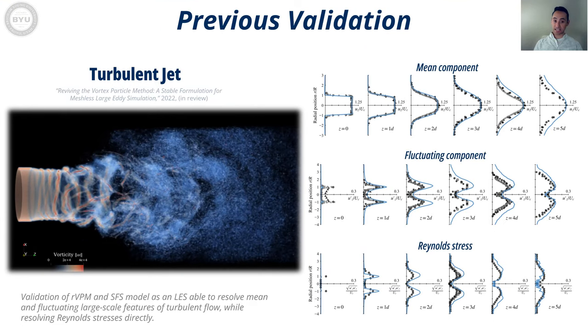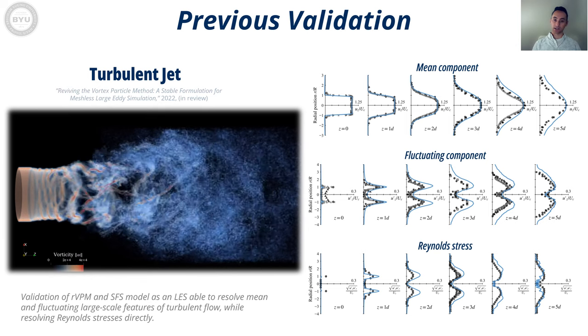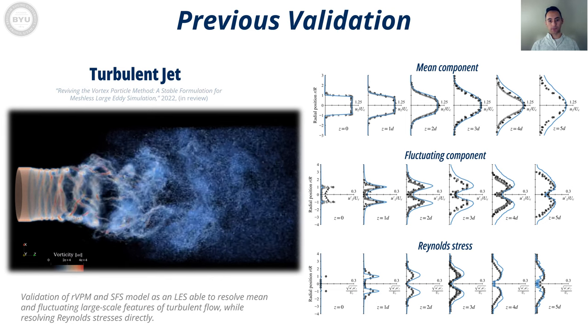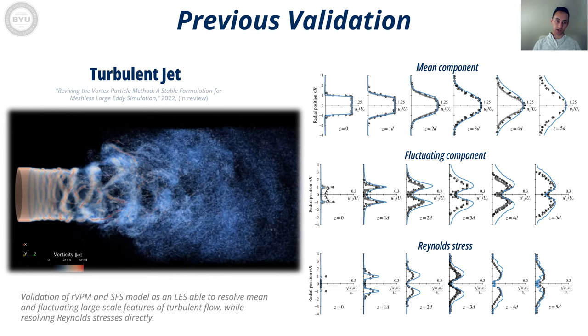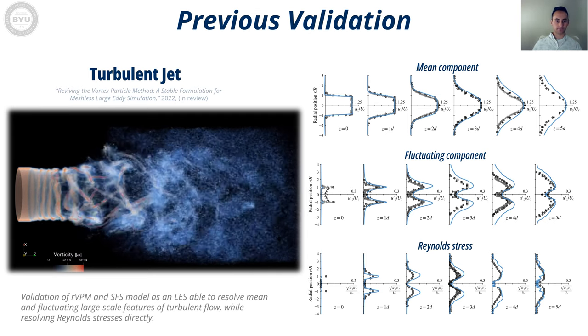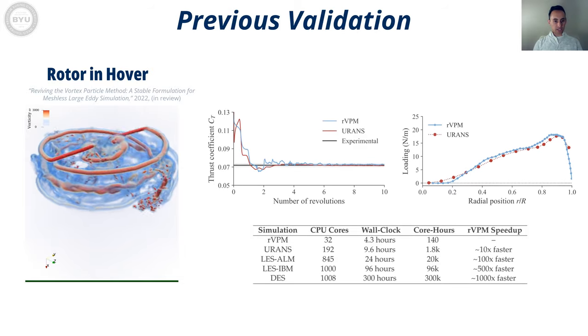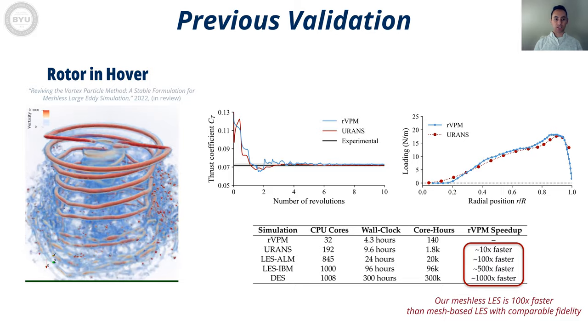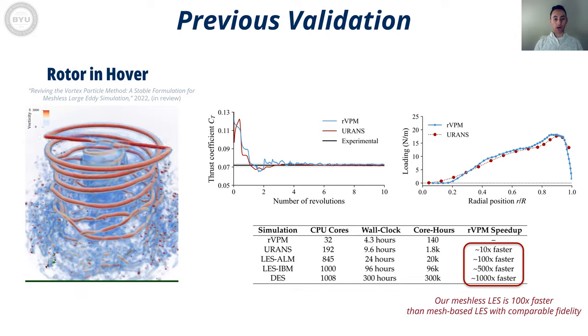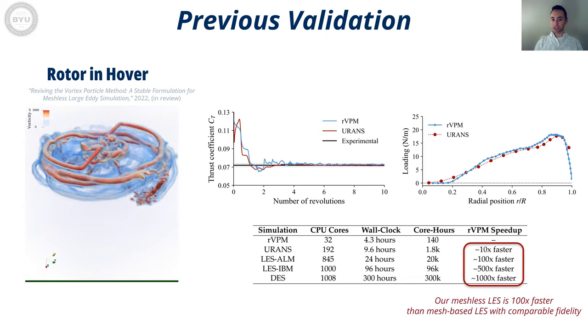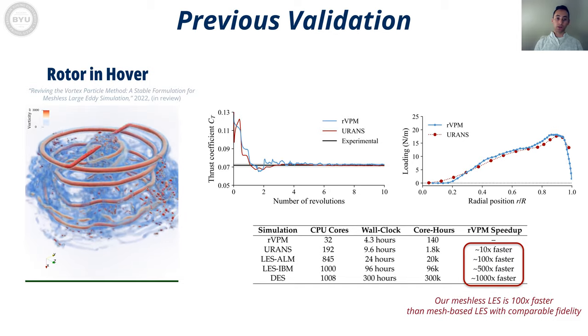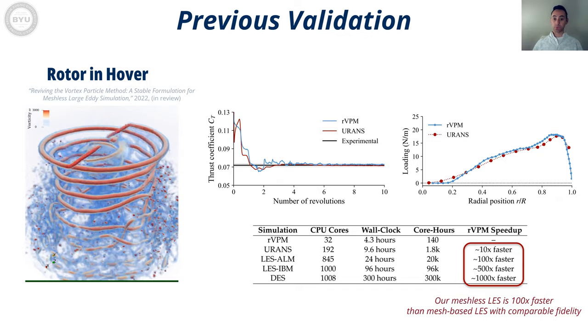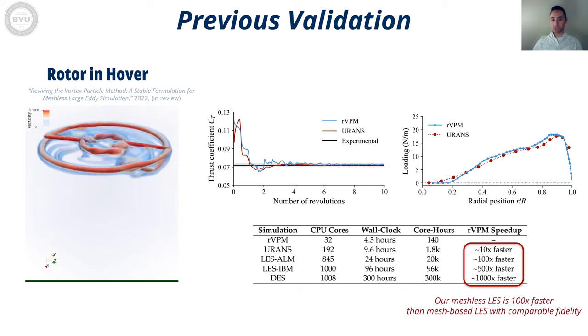In previous studies, we have extensively validated the reformulated VPM as a large eddy simulation. Here is a simulation of a turbulent jet. We compared the velocity profiles to experiments in the literature, finding good agreement. We validated our LES for a DJI rotor in hover, which resulted in a thrust that was within 2% of the experimental value. We also compared our meshless LES to simulations from the literature that simulated the same rotor with conventional mesh-based CFD, and we found our meshless LES to be 100 times faster than mesh-based LES.